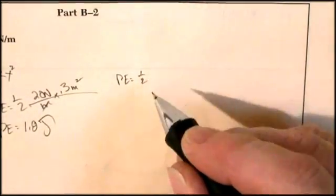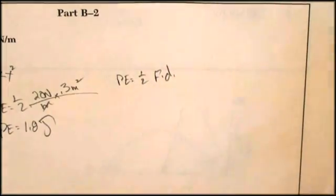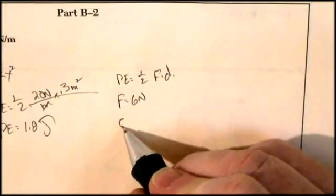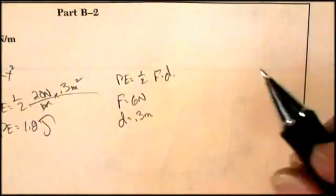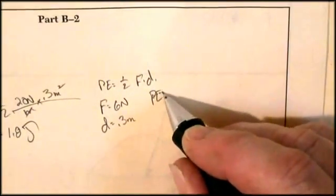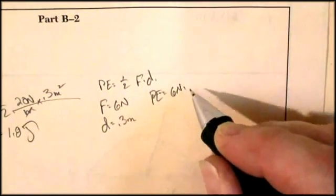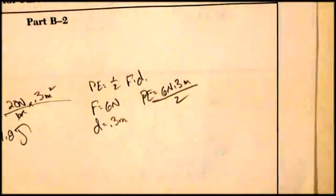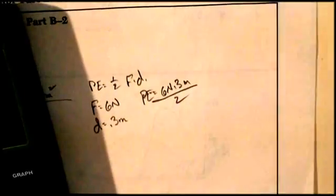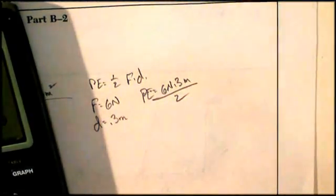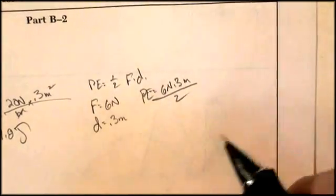So I could say my potential energy was equal to half of force times distance. And so my force here would be six Newtons, my distance would be 0.3 meters. And so I could say my potential energy was equal to, let's see, six Newtons times 0.3 meters divided by two. Let me get my calculator out and say, let's see, six times 0.3 divided by two gives me 0.9.